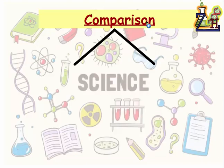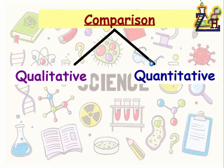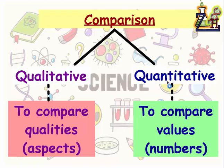A comparison has two types. The first type is qualitative and the second type is quantitative. When we say qualitative comparison, we mean to compare qualities or aspects of elements or items. While if you are going to make a quantitative comparison, it means to compare values and numbers.